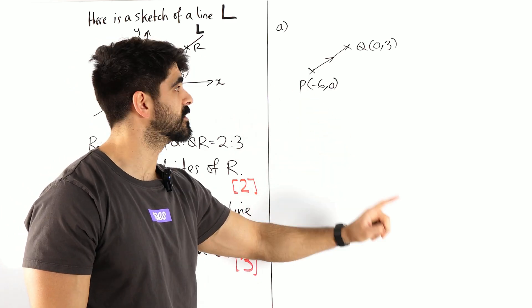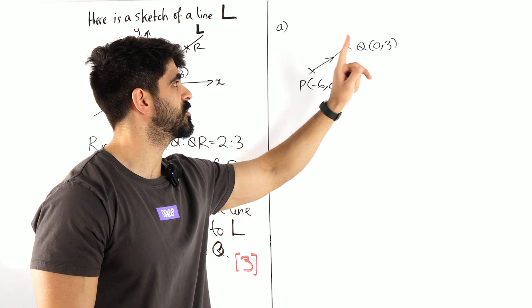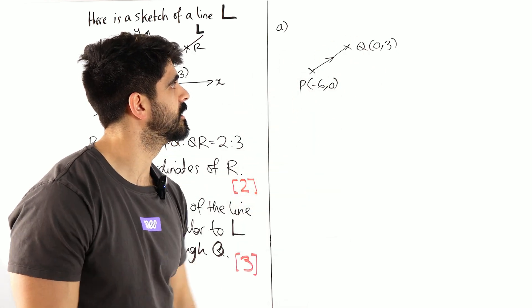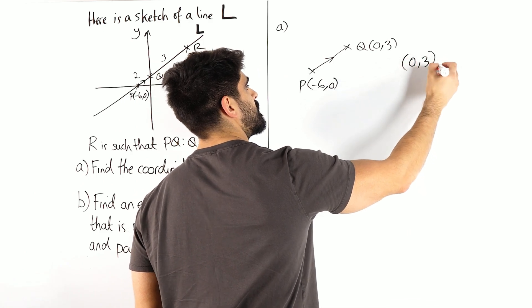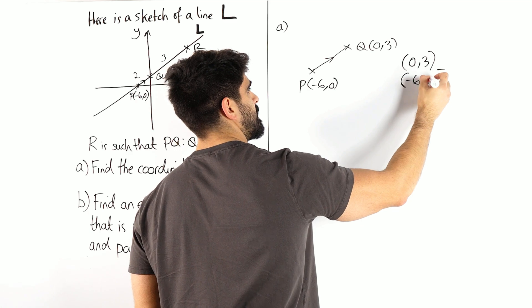To go from this to this you do this minus this. A bit of muscle memory for you guys. To go from this to this you do this minus this. Alright, so I'm going to do that here. So we have 0, 3, subtract minus 6, 0.